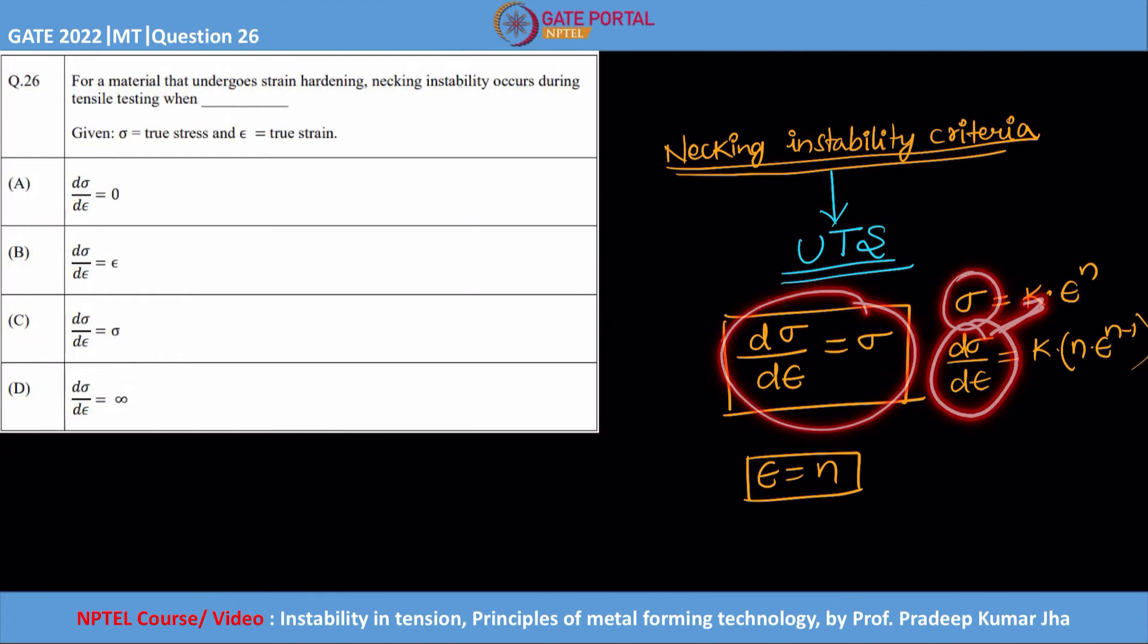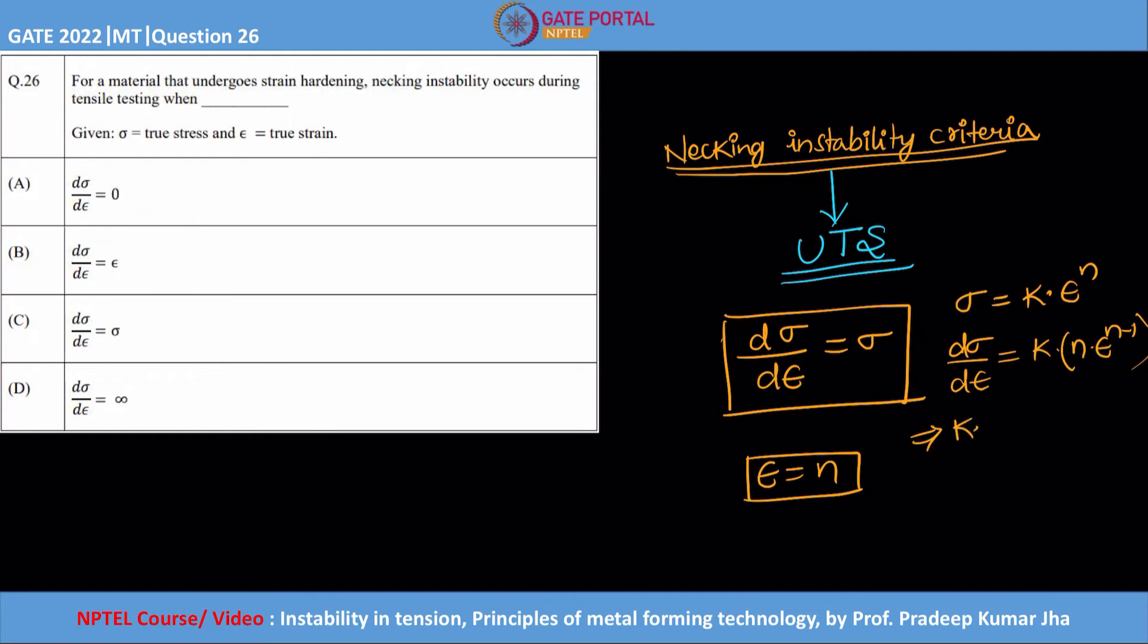the current criteria. So that means I can write k into ε power n is equal to k into n into ε power n minus one. So if you carefully observe what is happening, k gets cancelled, this is getting cancelled, and what you are remaining with is ε power minus one into n is equal to